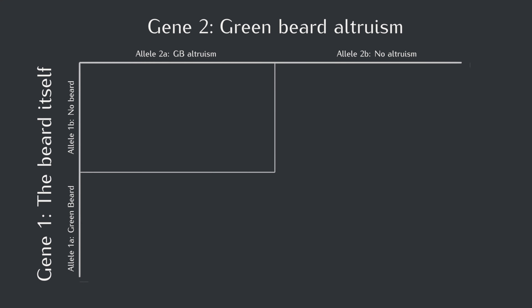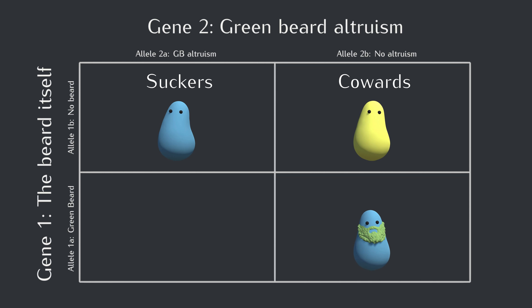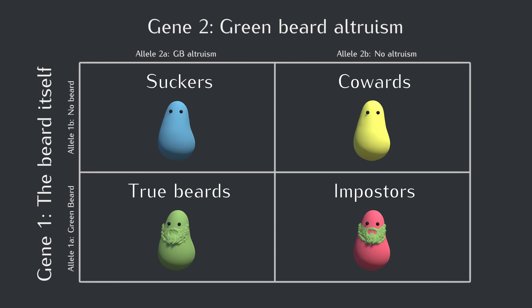This means there will be four types of creatures. The blobs with no beard and no altruism will be yellow — called cowards. The blobs with no beard but altruism toward green beards will be blue — called suckers. The blobs with a green beard but no altruism toward green beards will be red — called imposters. And the blobs with green beards who are also altruistic toward green beards will be green — called true beards. The blobs themselves can't see the colors; they just see the beards.